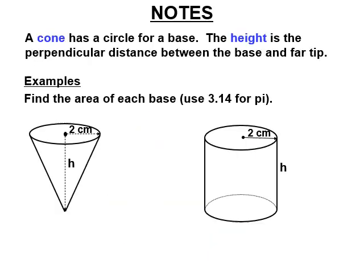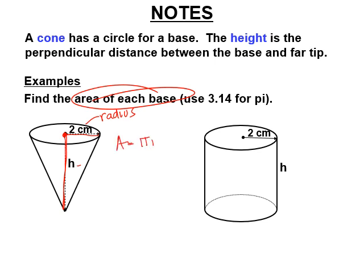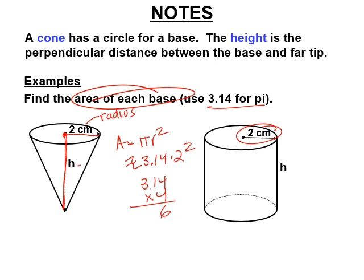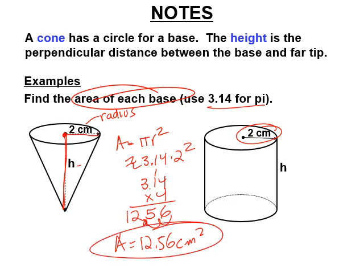A cone has a circle for a base. There's the radius — the distance from the middle of the circle to the outside — and the height straight up from the point to the center. The area of the base is pi r squared. Using 3.14, with radius 2, that's 3.14 times 4. The area is 12.56 square centimeters for both the cone and the cylinder — they have the exact same circle.